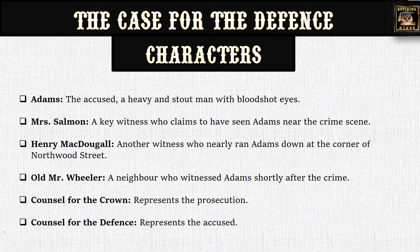Here are the central characters of the story. We have Adams, the accused — a heavy and stout man with bloodshot eyes. We have Mrs. Salmon, a key witness who claims to have seen Adams near the crime scene. We have Henry McDougall, another witness who nearly ran Adams down at the corner of Northwood Street. We have old Mr. Wheeler, a neighbor who witnessed Adams shortly after the crime. And we have counsel for the Crown, who represents the prosecution, and counsel for the defense, who represents the accused.